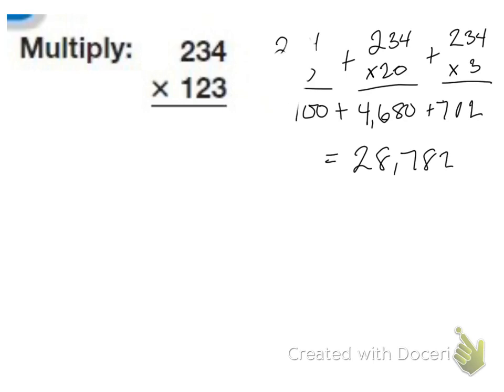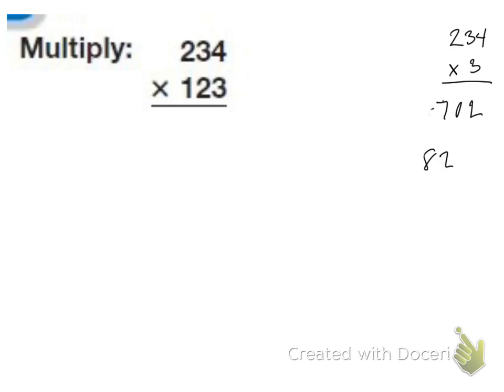So I don't have to separate the problem before I do it. I can actually just multiply as it is. The first thing I'm going to do is multiply my one's place value, which is the three. So I'm going to do three times four. Three times four is 12.